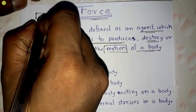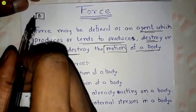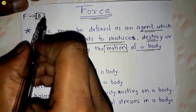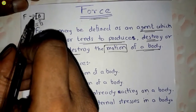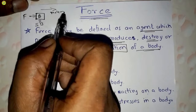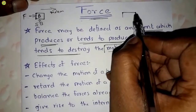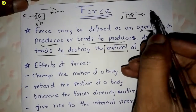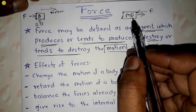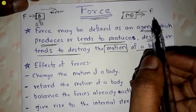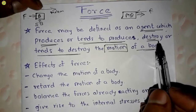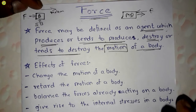Suppose this is a body and here a force is applied. This is a stationary body, and when we apply the force, because of this force this body will move from this direction to this direction — this is the motion of a body. And suppose this is a moving body moving in this direction, and we apply the force in the opposite direction; because of this force the motion of the body will be destroyed and this body will stop.